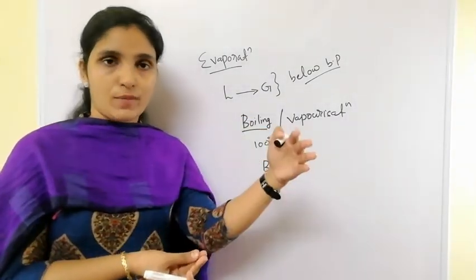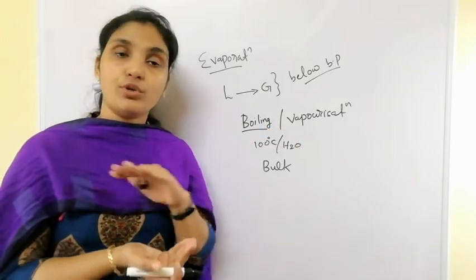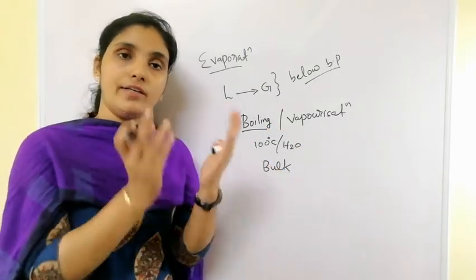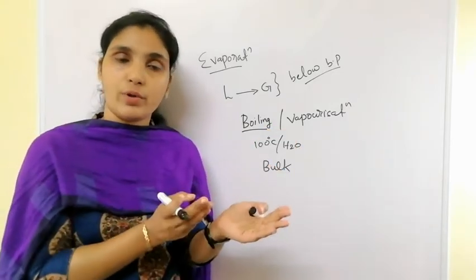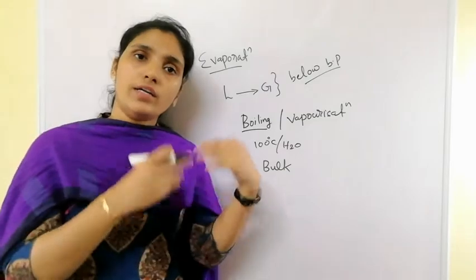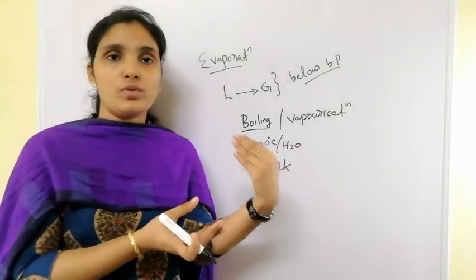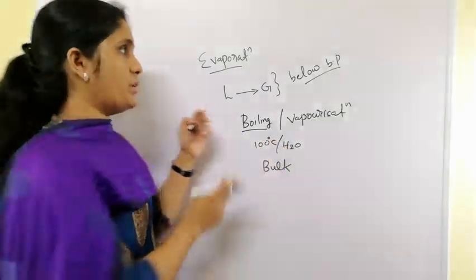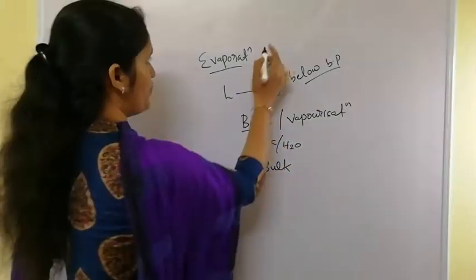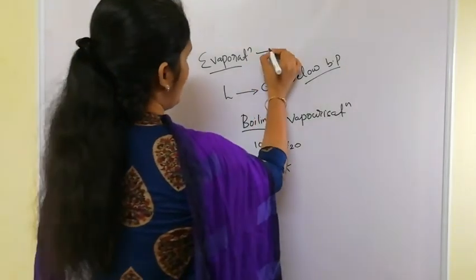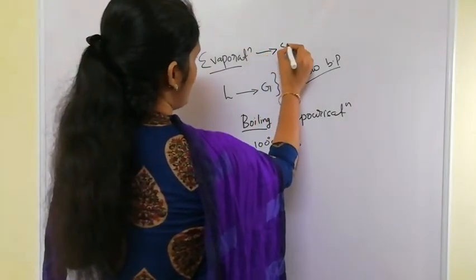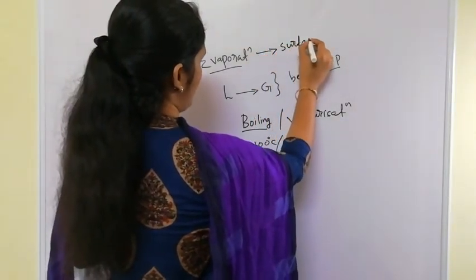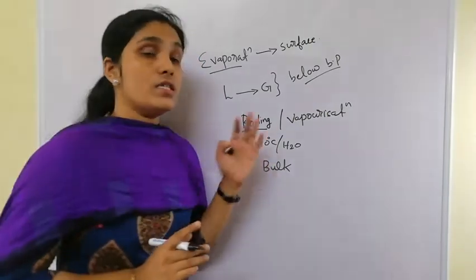The second difference: boiling is a bulk phenomenon. When a certain amount of water boils, it does not occur only on the surface — the entire bulk of water molecules is boiling. But evaporation is a surface phenomenon.